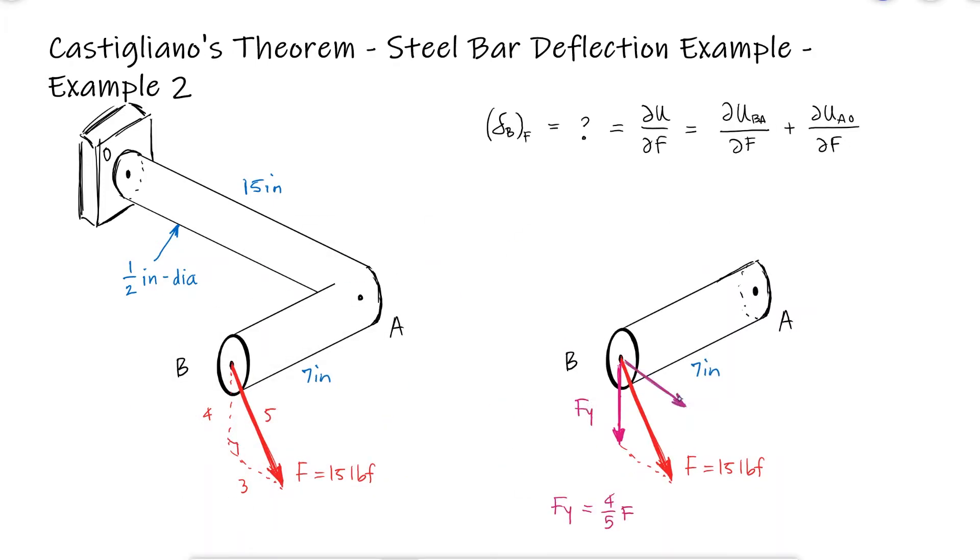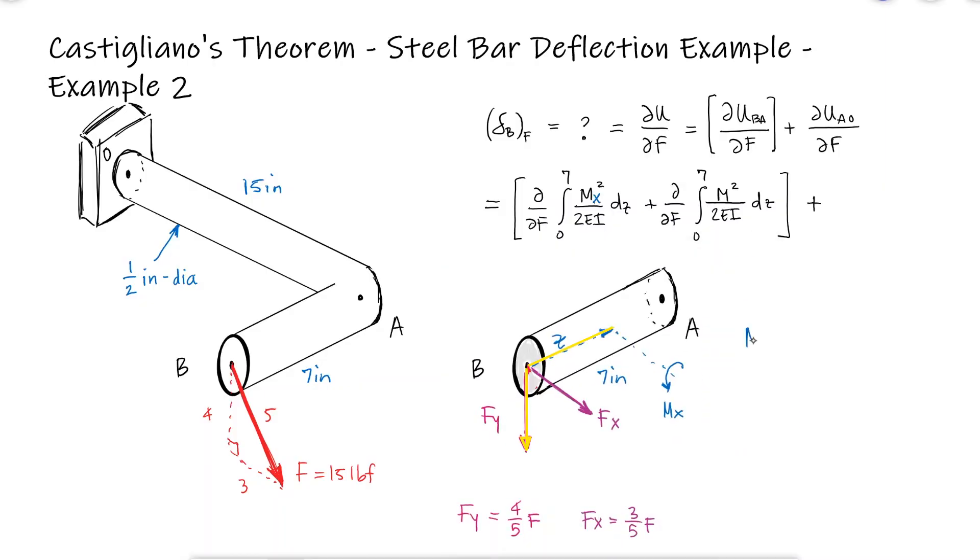Starting at where we're measuring the deflection, like we always should, we see that B would deflect down and in the positive x-axis due to the bending caused by these two forces. For any point along the z-axis, the moment of x caused by Fy would be equal to z times Fy. The moment of y caused by Fx would be equal to z times Fx.